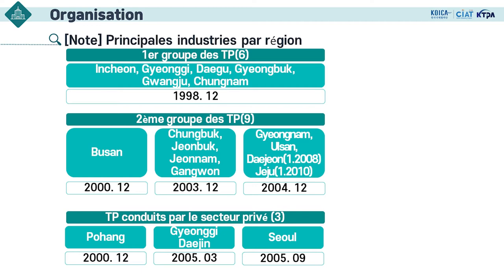Le premier groupe est sélectionné comme projet pilote par le comité sous tutelle du président afin de tester la possibilité des technoparcs. Il y en a six, y compris Chungnam, sélectionnés après l'adoption de la loi concernée en 1998. Grâce à leur succès, le deuxième groupe est créé dans différentes régions telles que Busan, Chungbuk, Chungnam, Chungbuk, Chungnam, Gangwon, etc. Concernant le troisième groupe conduit par le secteur privé, Pohang Technoparc a été établi avec une partie du financement investi en tant que capitaux privés par POSCO. Au total, il y a trois technoparcs conduits par le secteur privé.